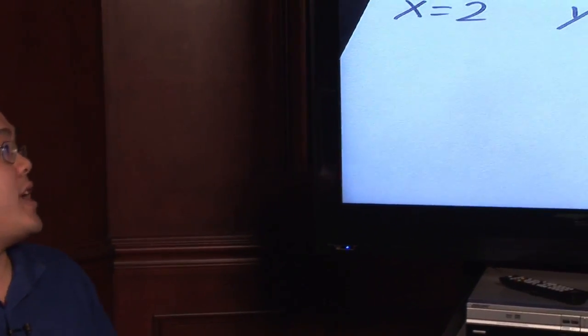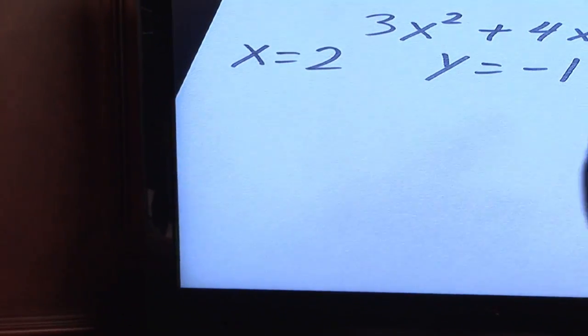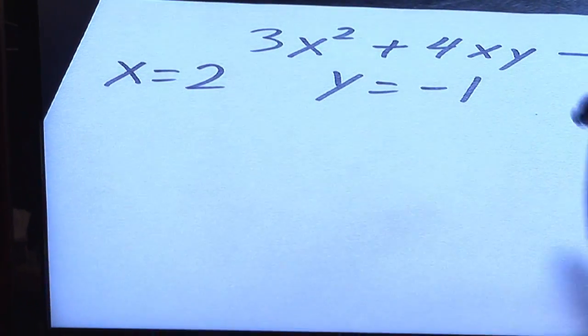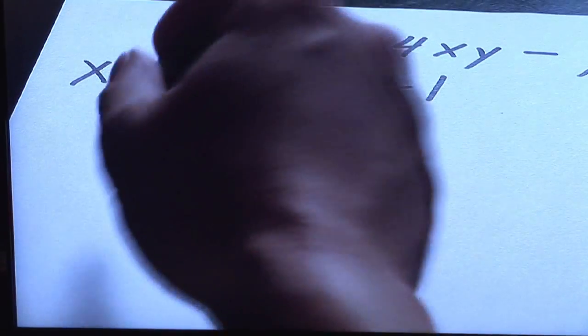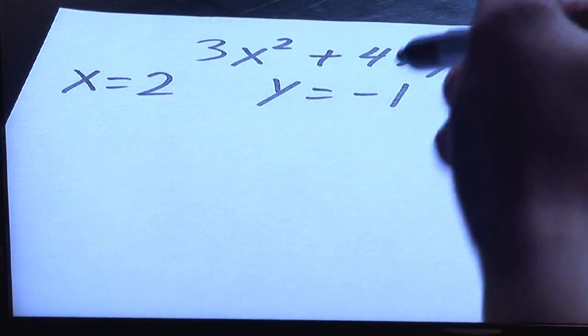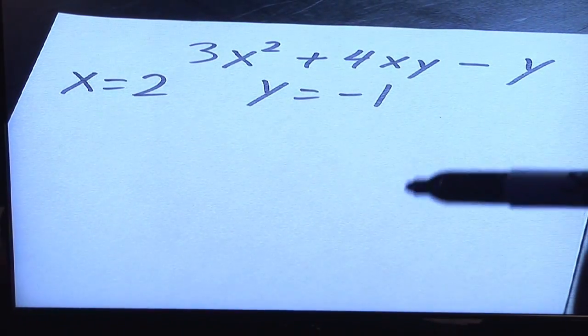Suppose you have the expression 3x squared plus 4xy minus y. Well, it seems kind of rough at first, but they're telling you, let x be 2 and y be negative 1.